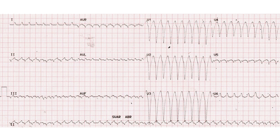Lead 2 shows multiple irregularities in the baseline which could be dissociated P waves. The atrial rate calculated from the dissociated P waves seems to be similar to that of the tachycardia rate, though one cannot be very sure as to which irregularities are P waves and which are artifacts.